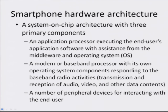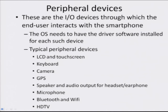Now we will take a look at the peripheral devices that are usually found in a smartphone. These are the IO devices through which the end user interacts with the smartphone, and the operating system needs to have driver software installed for each such device. A typical list of peripheral devices includes: the LCD and touch screen, the keyboard, the camera, the GPS, the speaker and audio output for headset and earphone, the microphone, Bluetooth, wireless connection, and HDTV.